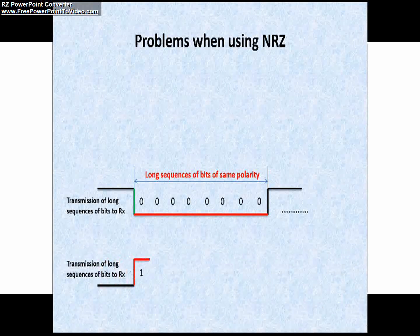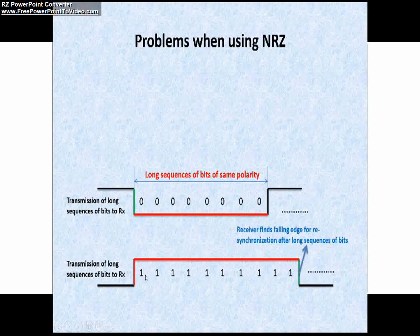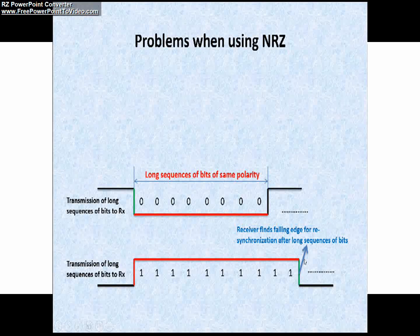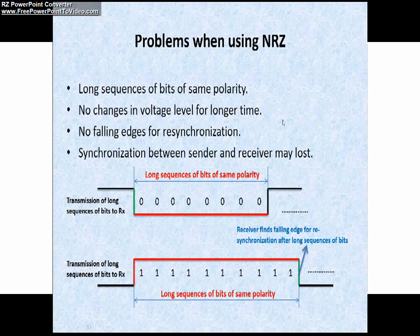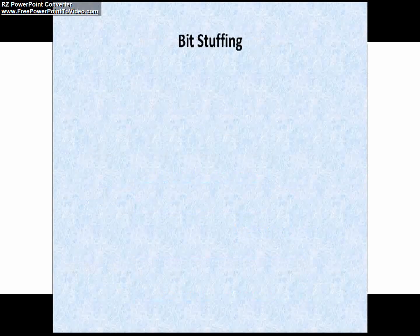How can we overcome this? After long sequences of bits, the receiver finds a falling edge for resynchronization. To summarize the problems of NRZ: long sequences of bits of same polarity, no changes in voltage level for longer duration, no falling edges for resynchronization, and hence synchronization between sender and receiver may be lost.